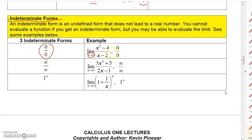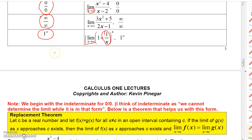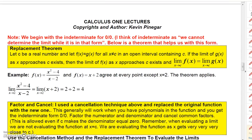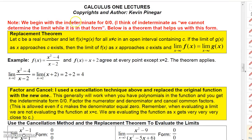Another indeterminate form is infinity over infinity. If you tried to evaluate a rational function as X approaches infinity, both the top and bottom go to infinity, giving infinity over infinity. There's also 1 to the infinity — as X approaches infinity, 1 over infinity goes to zero, so the expression inside becomes 1 to the infinity power. Those are the indeterminate forms we'll focus on right now.